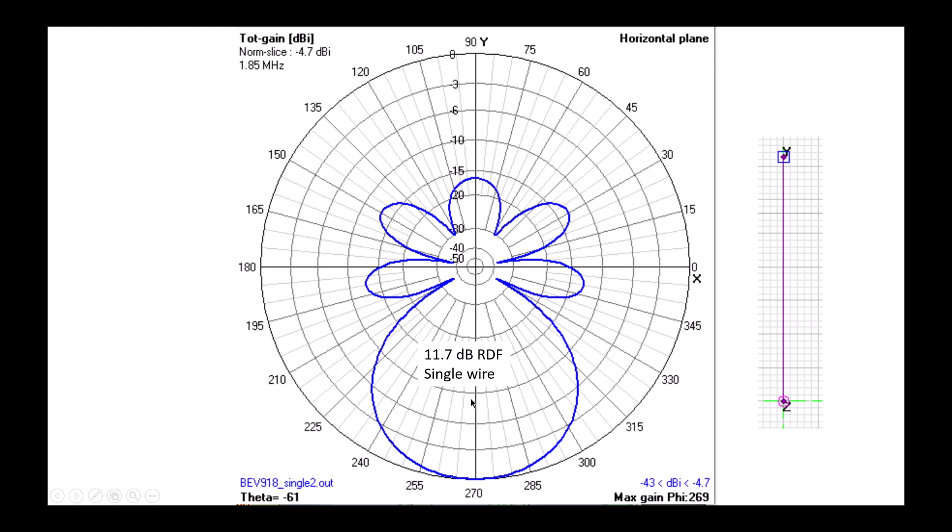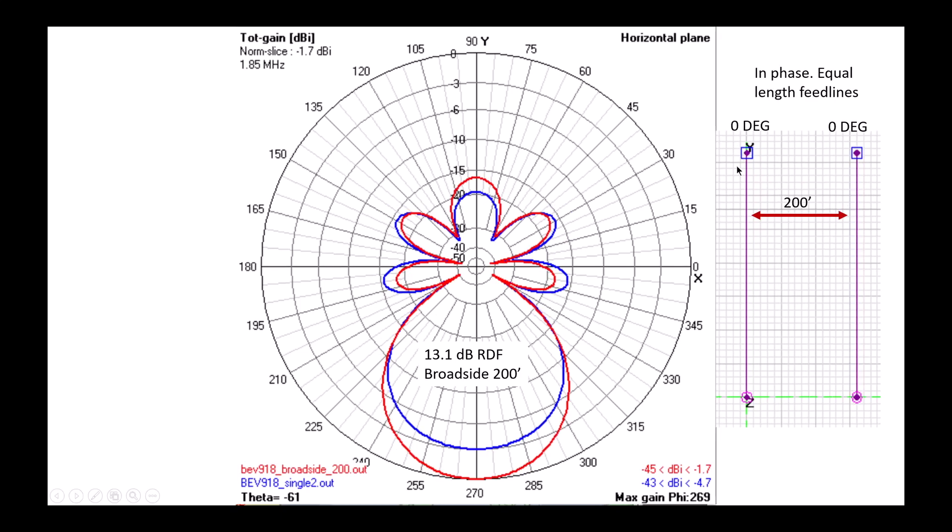Anyway, we take a single beverage which has an RDF of about 11.7. This is different than the other modeling. It's a function of the ground that I use, but it's really the relative RDF that we're interested in. If we put two of those wires and we space them 200 feet apart and feed them in phase, that is to say zero degrees at both, in other words equal length feed lines to a combiner, a zero degree hybrid combiner or magic T, we end up with an RDF of 13.1, slightly improved over the single vertical which is shown in blue. We do increase the gain by 3 dB because we now have two verticals.